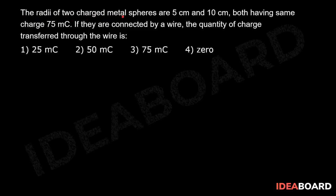The radii of two charged metal spheres are 5 centimeter and 10 centimeter, both having same charge as 75 millicoulomb. If they are connected by a wire, the quantity of charge transferred through the wire is?